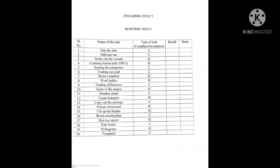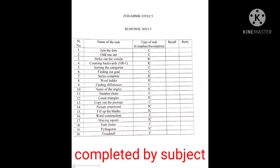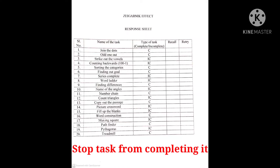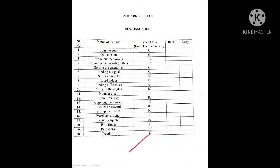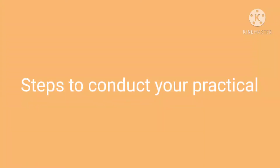These are the names of the tasks that you will be giving the subject to perform, one by one. Some tasks will be completed by the subject and other tasks you will stop the subject from completing. The 'C' here means the tasks that you will let the subject complete, and the 'IC' means the tasks that you will stop the subject from completing. Following are the steps on how to conduct your practical.